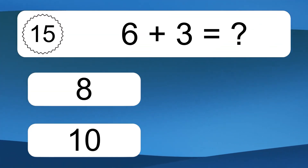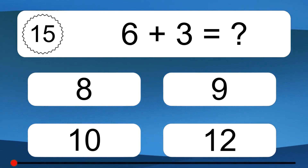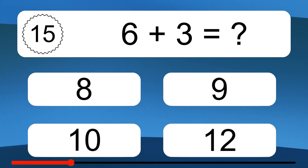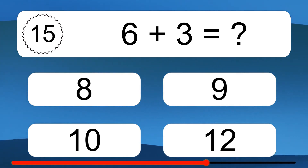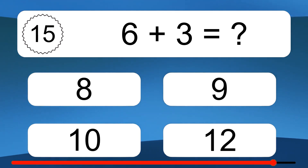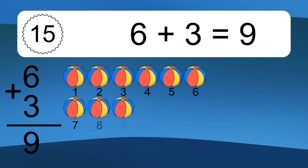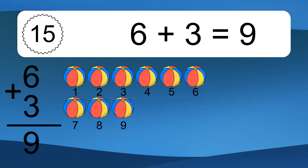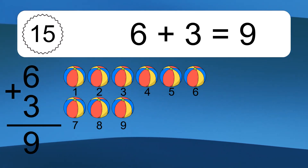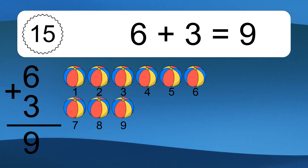6 plus 3 equals what? 6 plus 3 equals 9. Let's count it: 1, 2, 3, 4, 5, 6, 7, 8, 9.